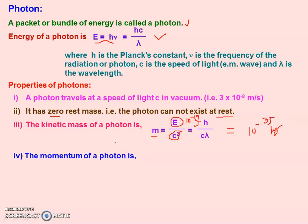Now, the momentum of the photon: since there is a mass and a speed, there should be a momentum. The momentum of the photon may be calculated with the formula p = E/c. Since E is very small, when we divide it by the speed of light, it comes out to a very small value. So the photon's momentum is very small.